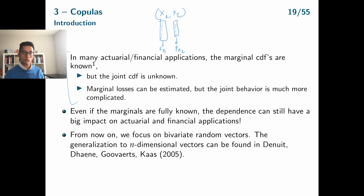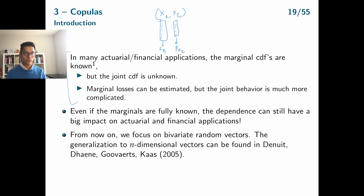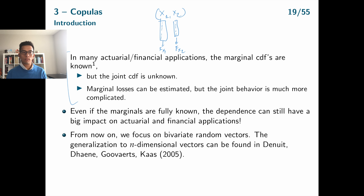We will need copula functions to connect these marginals. It is important to use copula functions because different copulas will give different joint CDFs for the random vector (x1, x2), and therefore will give different probabilities of having extreme losses or extreme gains for x1 and x2 at the same time.